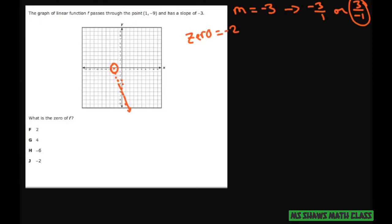Another way to do this, if you don't like the graphing part, is just to write your slope like that and plug in this point. So your y is -9, your x is 1, and solve for b.